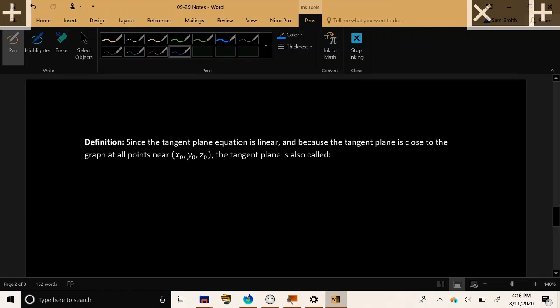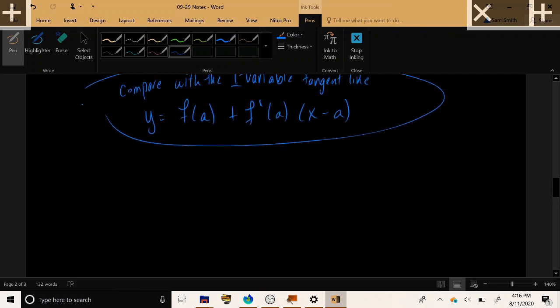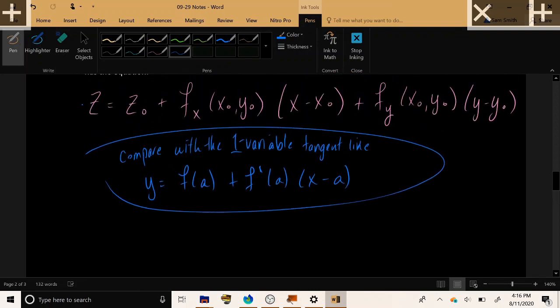Now recall from calculus one that the tangent line equation was exactly the same as the equation for the linear approximation to a function. Those were the same thing. They were synonymous.